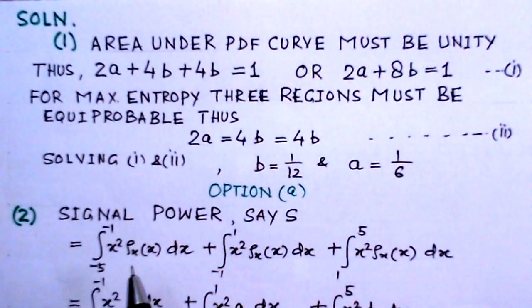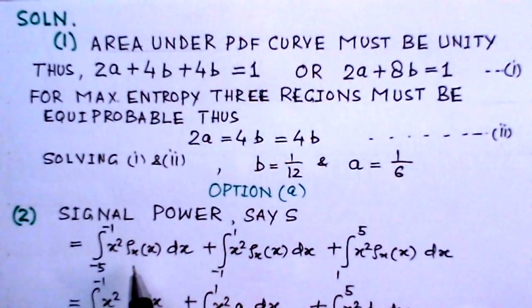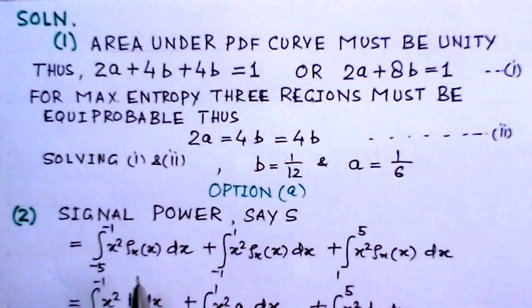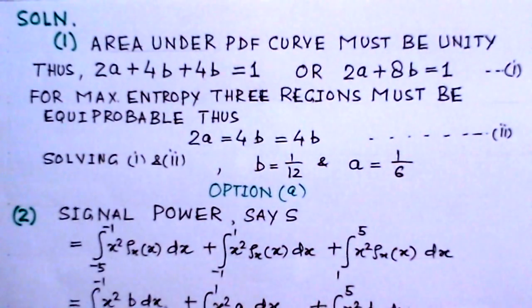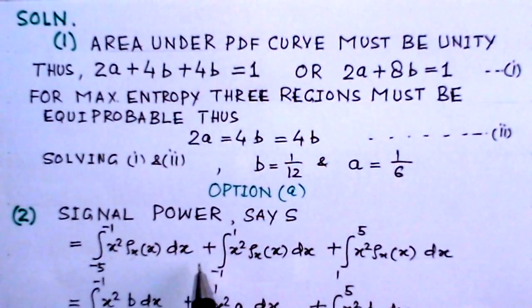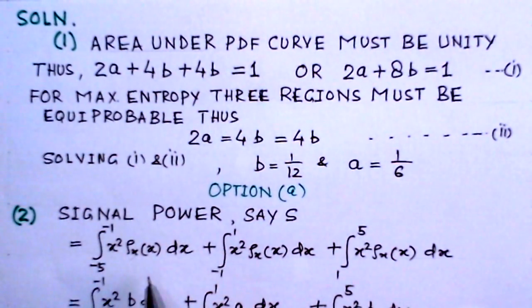Since the signal is not purely analog, we determine the power by finding the mean square value. For a continuous random variable, the mean square value is defined as the integral from minus infinity to infinity of x squared times rho(x) dx, where rho(x) is the probability density function. Evaluating this integral gives the mean square power.